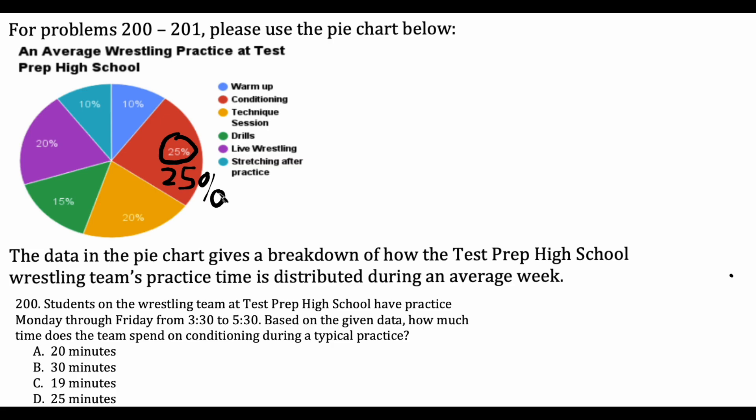Okay, let's talk about this. There's a couple different ways to approach this question, but the main thing that you have to see is that, first of all, conditioning is represented by this red portion here on our pie chart, and conditioning represents 25% of the practice time. We know that the practices go from 3:30 till 5:30, so that's two hours.